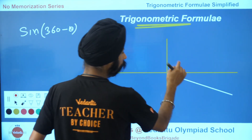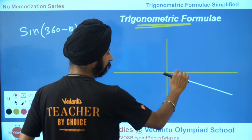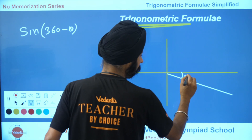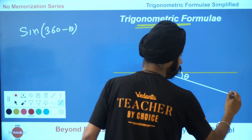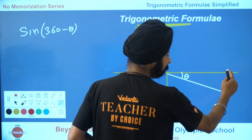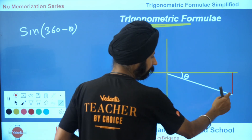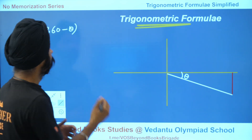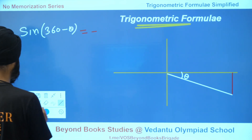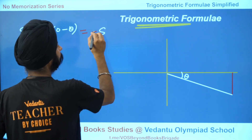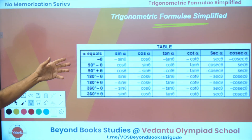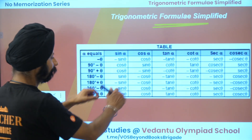360 minus theta — the whole thing would have been 360, so 360 minus theta is this angle, meaning this angle is theta. Again, complete the triangle here. From this triangle's perspective, what is sine theta? It is this maroon line divided by this hypotenuse. The maroon line is negative. So this is giving me minus sine theta. So sine of 360 minus theta is minus sine theta.